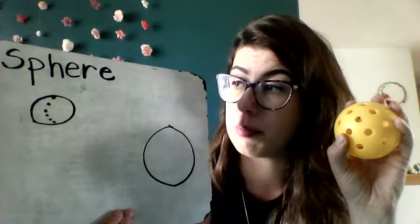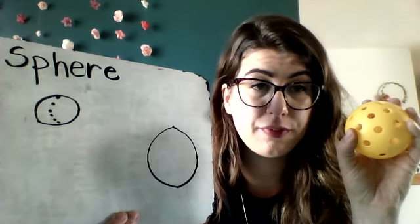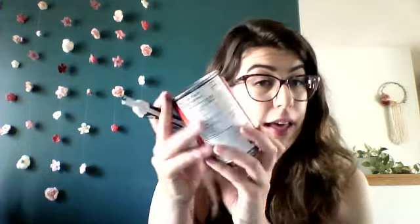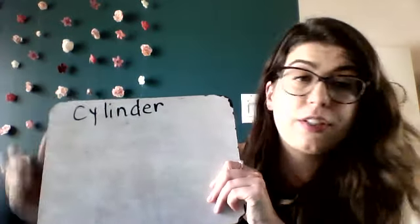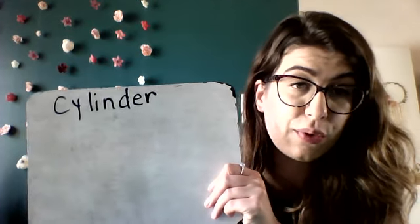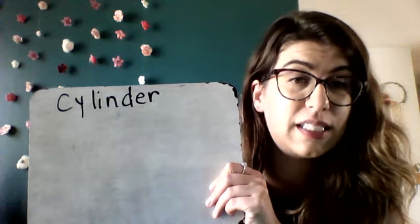So that's the first one—sphere. The next one is called a cylinder. An example of a cylinder would be a can. This is called a cylinder. So I'll spell cylinder for you: C-Y-L-I-N-D-E-R. You'll notice it starts with a C, it's a Cinderella C, because we say 'suh' instead of 'kuh.'